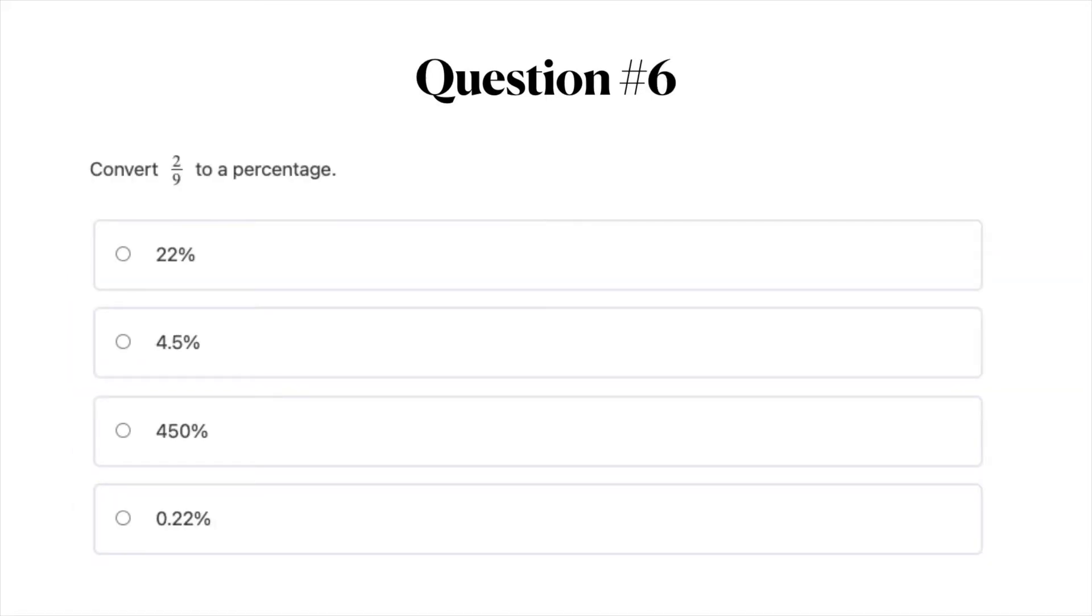Question number six. Convert 2 over 9 to a percentage. Your answer options are A, 22%, B, 4.5%, C, 450%, or D, 0.22%. Go ahead and pause the video if you need some time and when you're ready move on to question number seven.